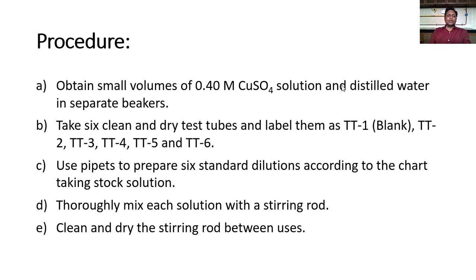Coming to procedure, you have to take small volumes of 0.4 molar copper sulfate stock solution and distilled water in separate beakers on your table. Take six clean and dry test tubes and label them as TT1, TT2 up to TT6. TT1 is blank and TT6 is the purely stock solution. You have to use pipettes to prepare six standard dilutions according to the chart taking stock solutions. The chart is displayed in the next slide. Thoroughly mix each solution with a stirring rod, clean and dry the stirring rod between uses because otherwise the concentrations will be mixing up.